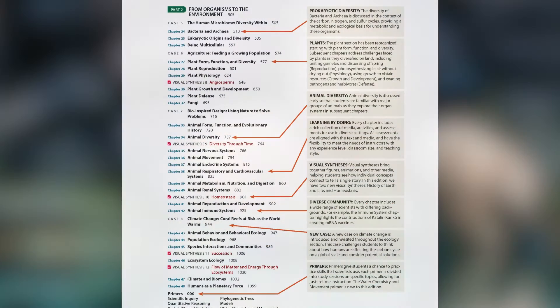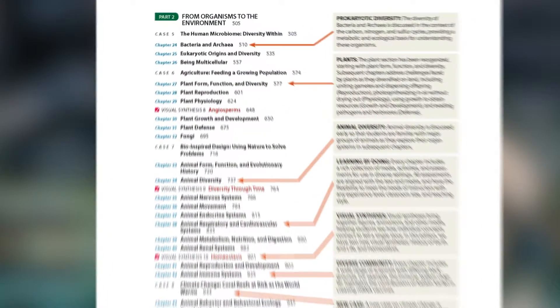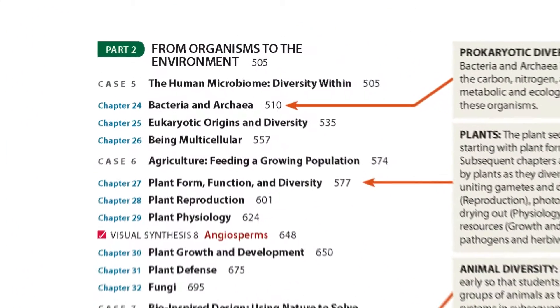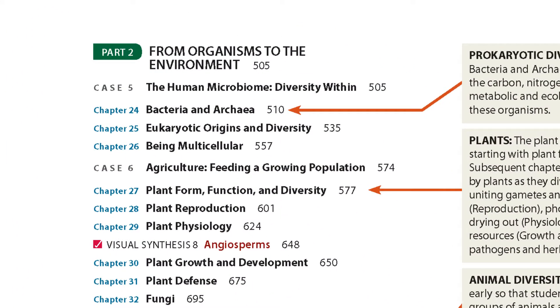Part 2 is titled From Organisms to the Environment. In this section of the book, we are focusing on the major groups of organisms and ecology. In general, we take the approach of looking at the form, function, and diversity of organisms.